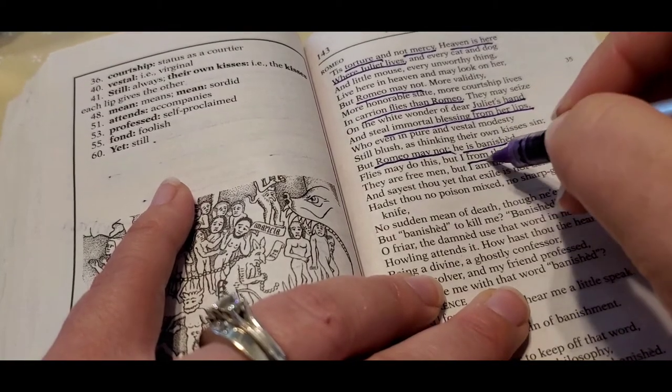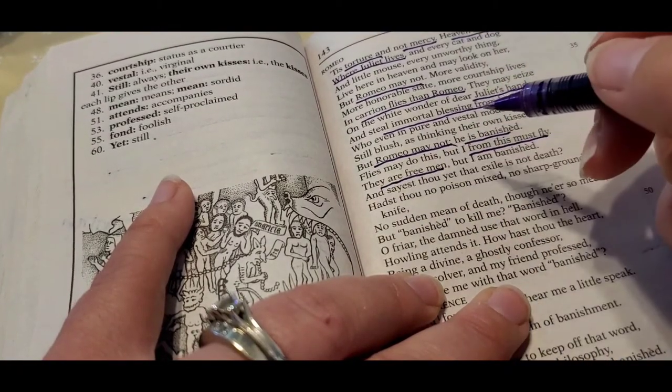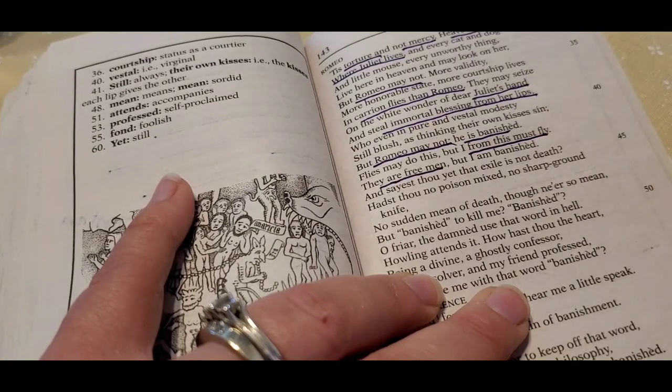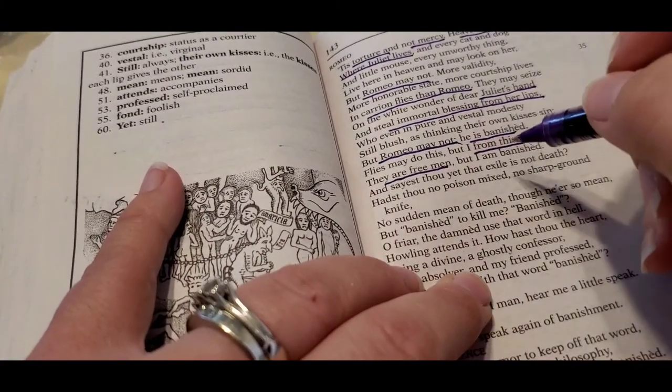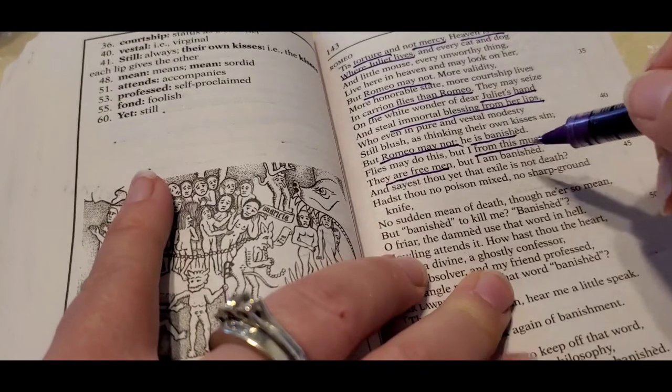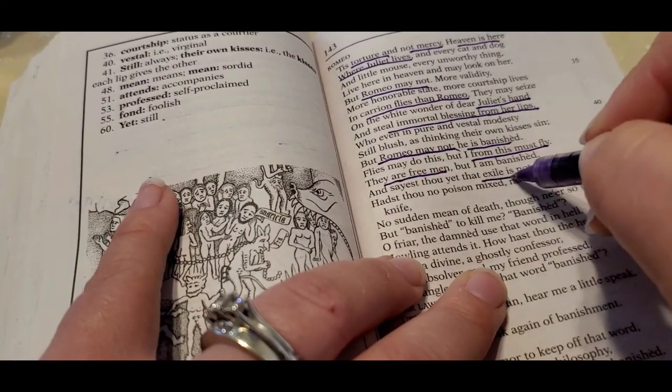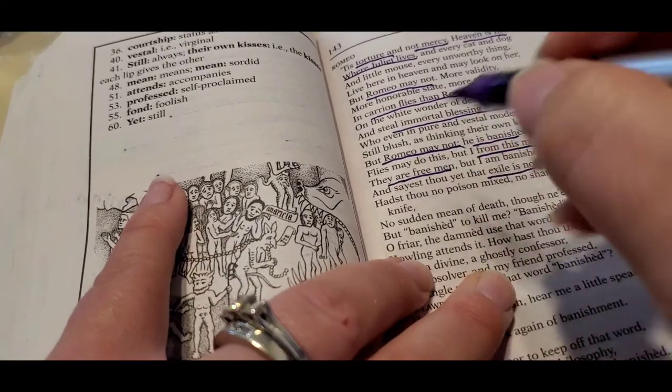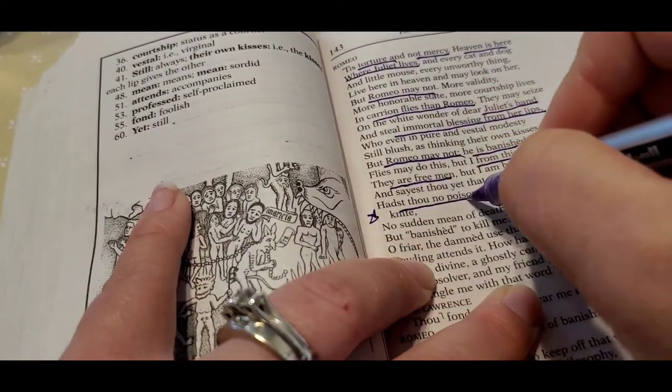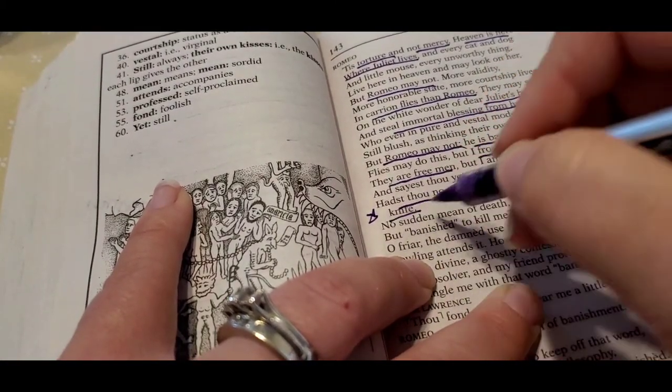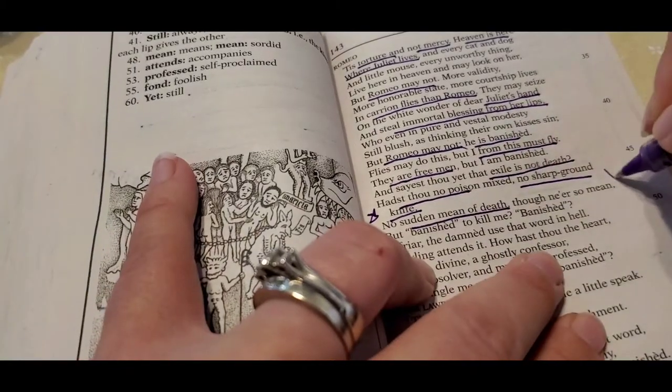And then he says, you know, more courtship lives than flies than Romeo. A fly that can land upon Juliet's hand and basically kiss her lip has more relationship than I have. But no, Romeo can't. He's banished. And he says, I must fly. Can I put the dogs away? Because I'm going to go out again. Just leave the dogs. They're okay. They're barking because mommy's talking to the camera.